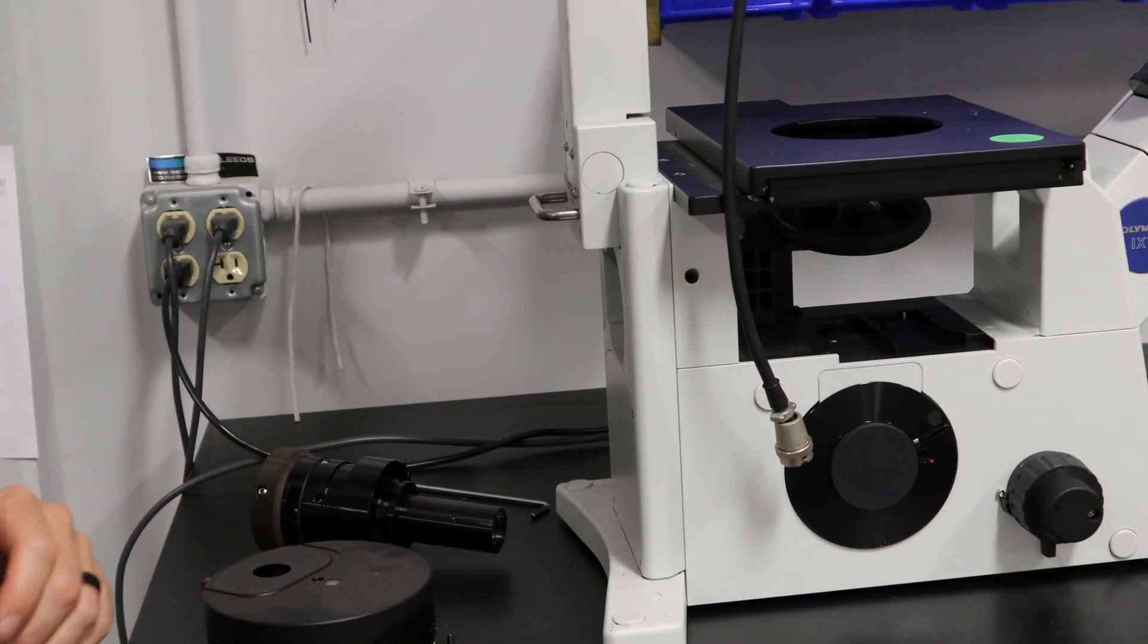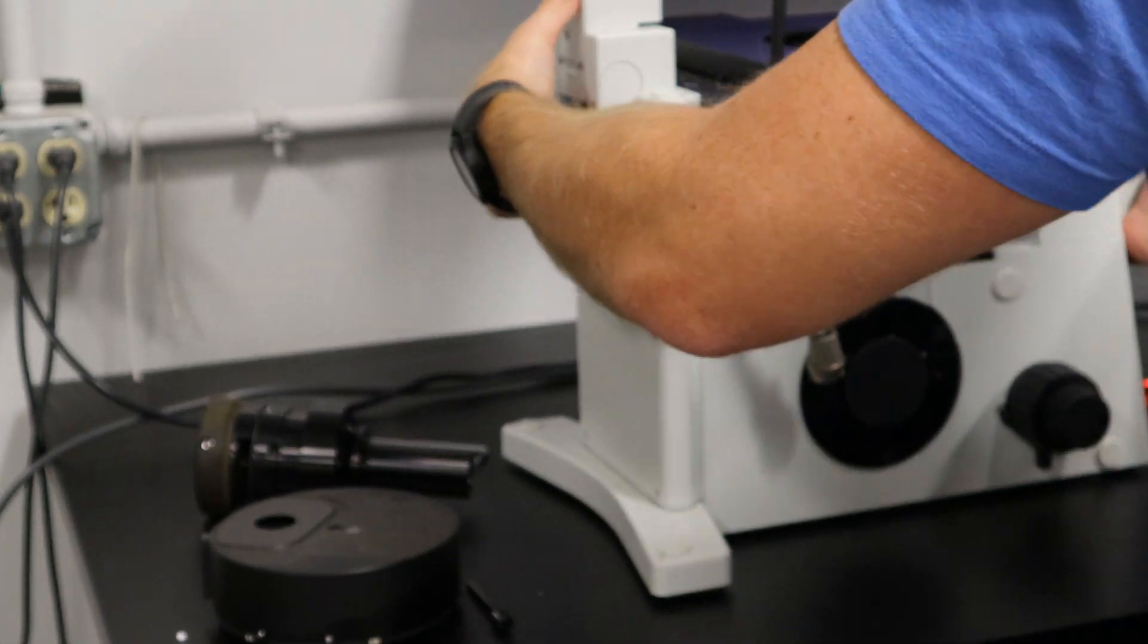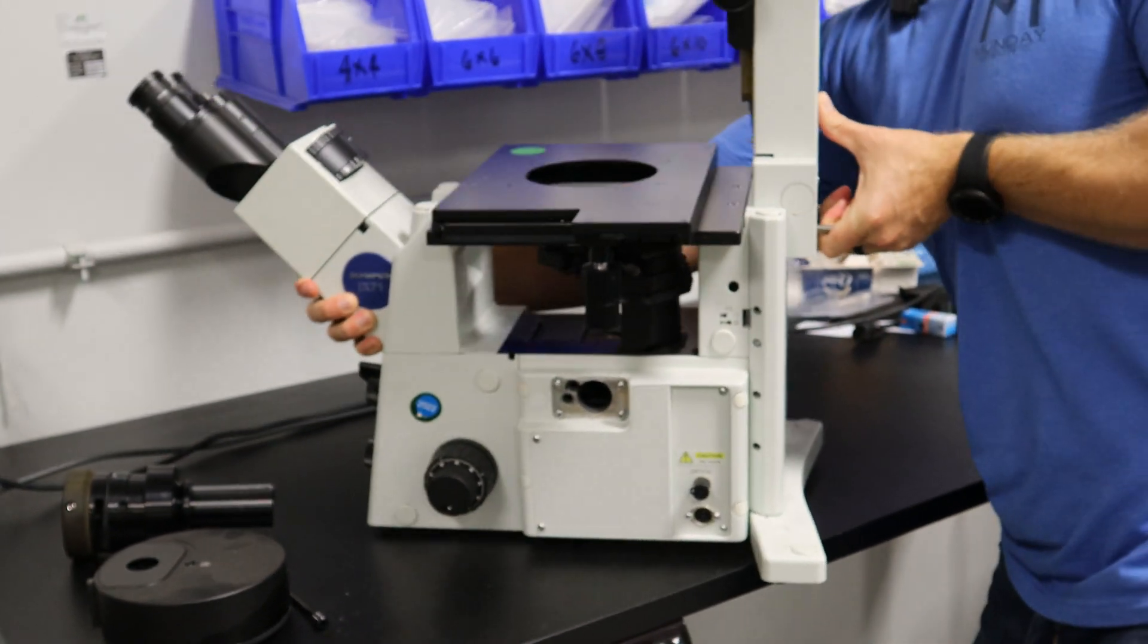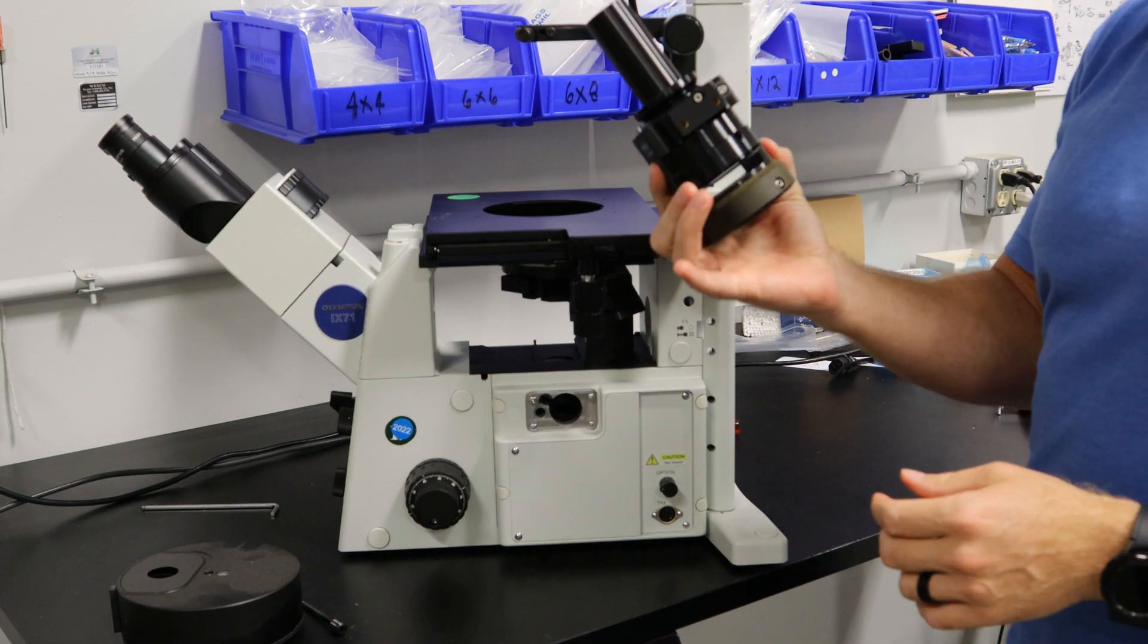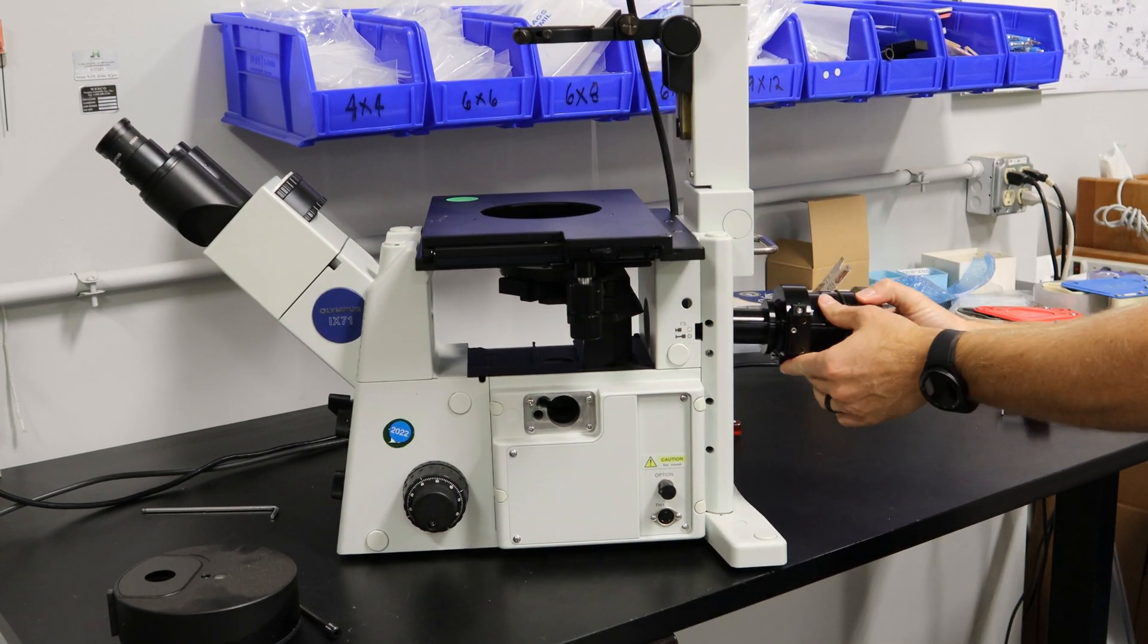Now we're going to put it all back together so you can see the assembly side. Right here, we've got the fluorescent illuminator. We're going to slide it in the back side.